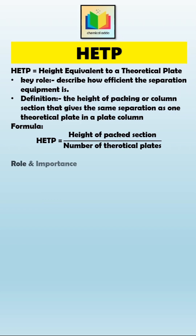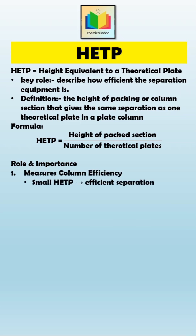Now let's talk about the role or importance of HETP. First, HETP helps to measure column efficiency. If the HETP value is small, that means the column is very efficient because each small section of packing gives one equilibrium stage. And if the HETP is large, the efficiency is lower.